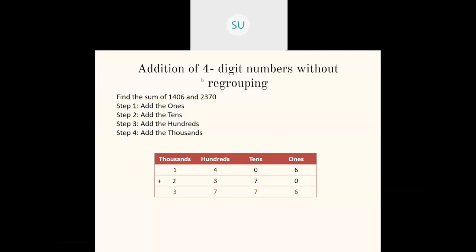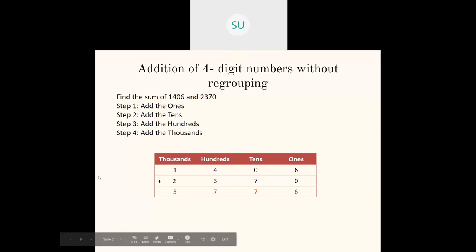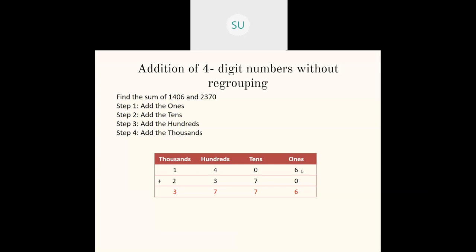Here they have given an example: find the sum of 1,406 and 2,370. First we make a box and write the numbers in their place values. In 1,406: 6 is in the 1's place, 0 in the 10's place, 4 in the 100's place, and 1 in the 1000's place. In 2,370: 0 in the 1's place, 7 in the 10's place, 3 in the 100's place, and 2 in the 1000's place.